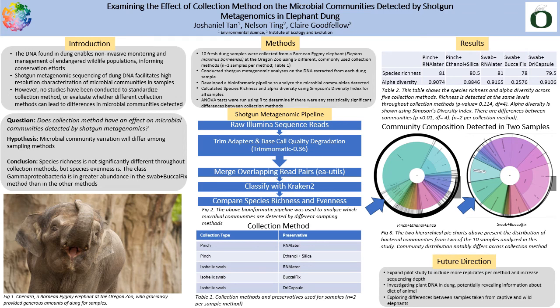Hello, everyone. My name is Josh Daniel Tan, and I am a senior in environmental science with a focus on life sciences, as well as a minor in biology. I conducted my research in the lab of Dr. Nelson Ting, and my mentor is Claire Goodfellow, who is a PhD student in the Institute of Ecology and Evolution. I will be presenting my research today, where I examine the effect of collection method on microbial community variation detected by shotgun metagenomics in elephant dung.